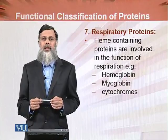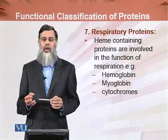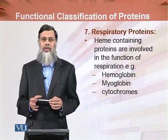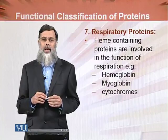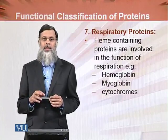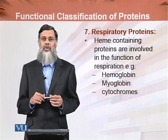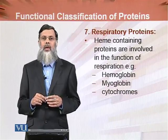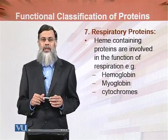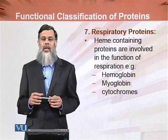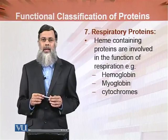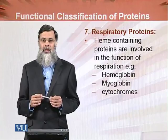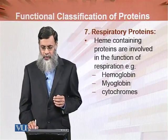Hemoglobin functions to transport oxygen from the lungs to the tissues and carbon dioxide from the tissues to the lungs. Similarly, myoglobin is present in the muscles and is also a heme-containing protein. Cytochromes are also heme-containing proteins, but these are part of the electron transport chain present in the mitochondria and are used in the generation of ATP, which is the source of energy in the human body.